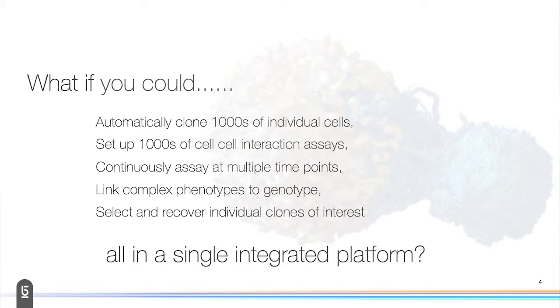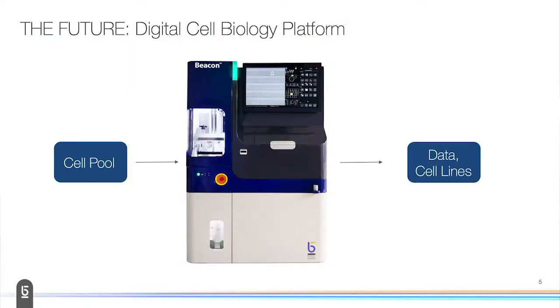We'll show you how we do that and set up as many cell-cell interactions with multiple different cell types, then continuously assay these through time through multiple days with culture, watching what's happening in time lapse, and then linking all of that complex phenotypic data that you've built up to a genotype in the end so that you can recover and select those individual clones of interest. Of course, we're doing this on a single platform.